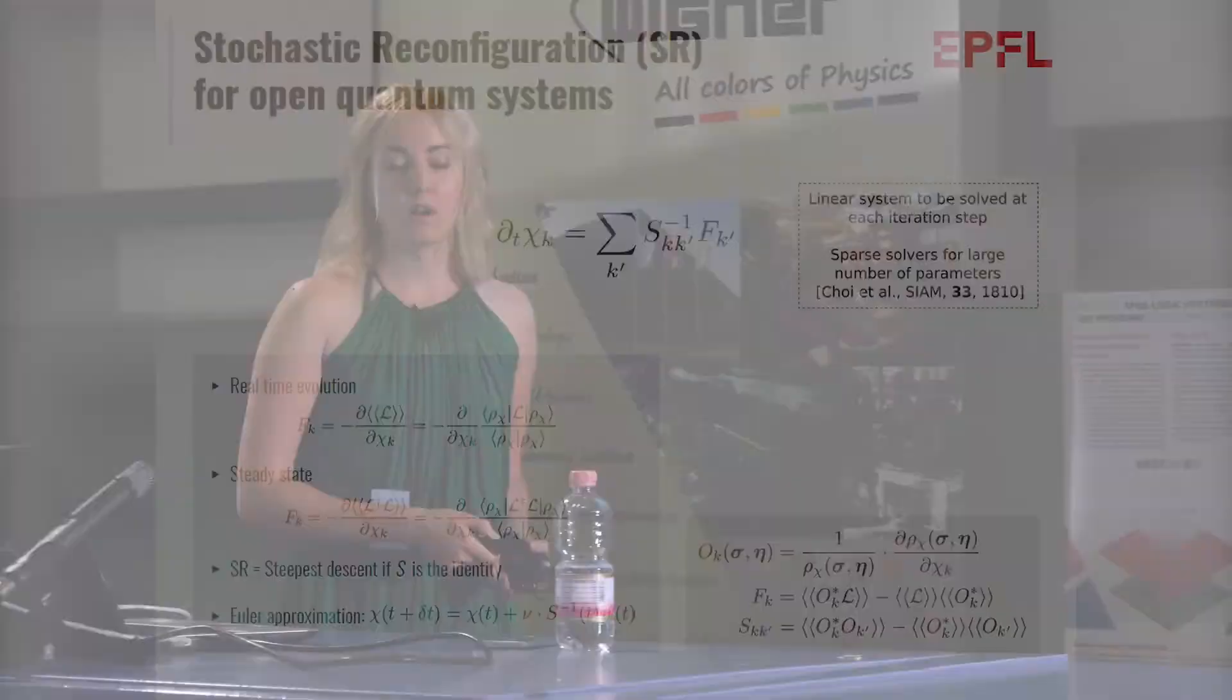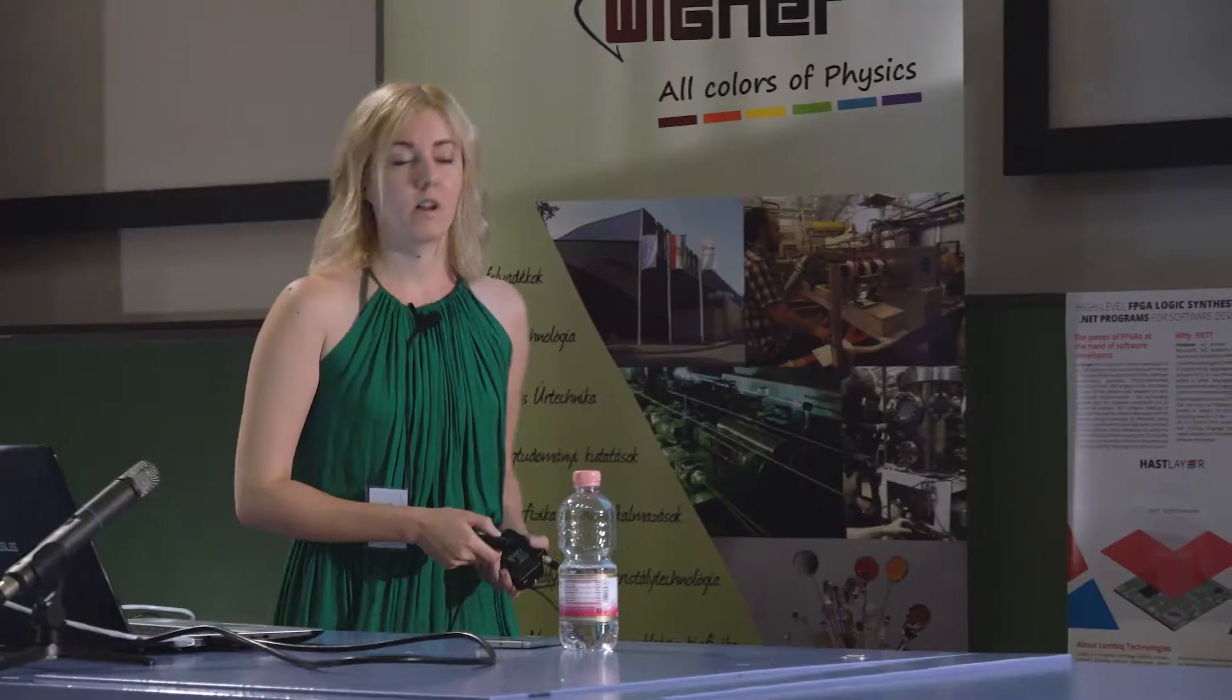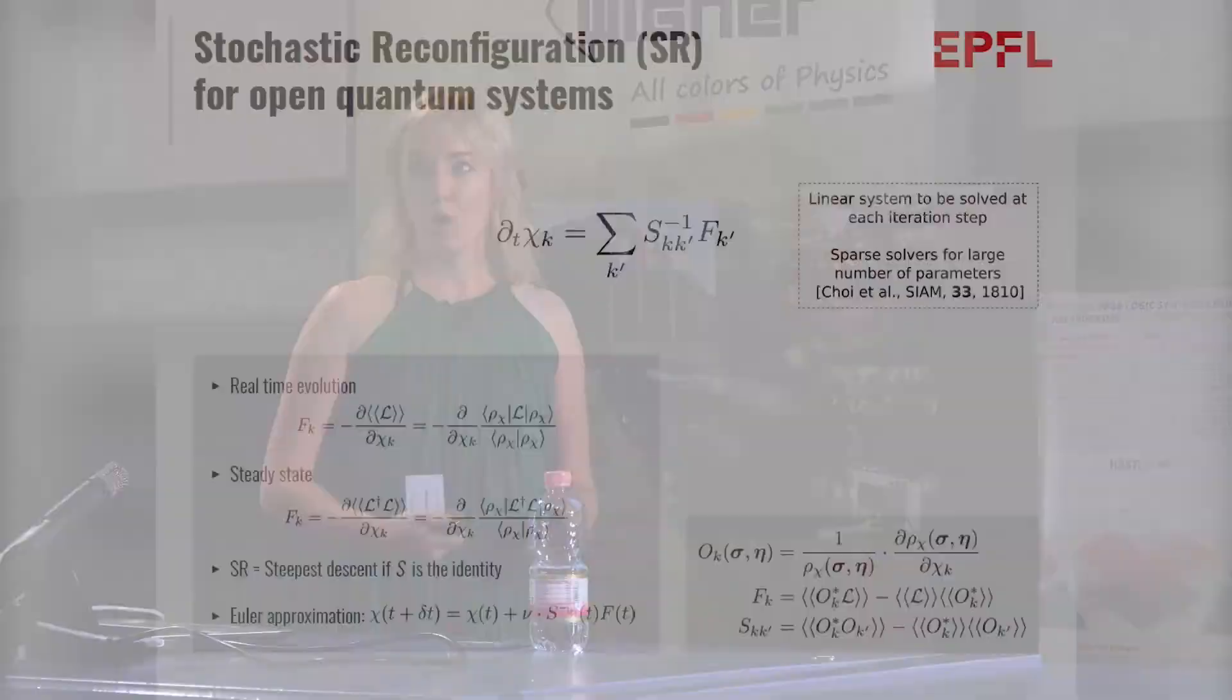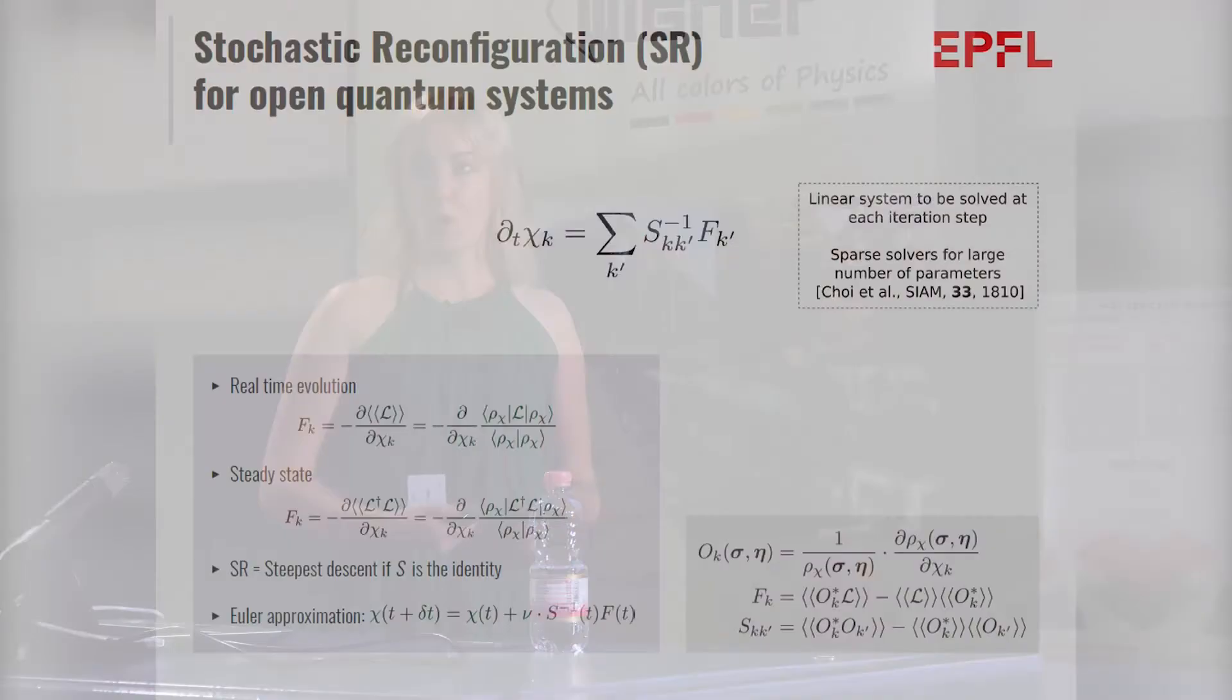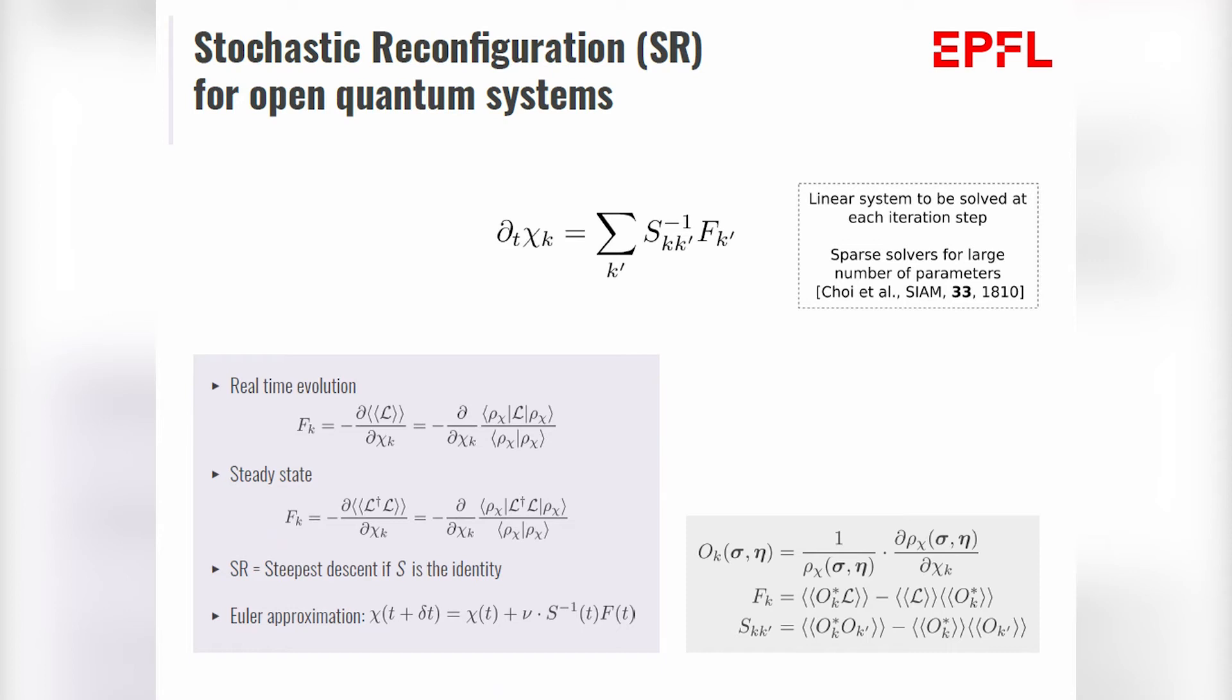We can also show that these forces are nothing else but the derivative of the expectation value of our super operator. What does this mean? It means that if we drive the evolution with this force, it will give us the real-time evolution until the steady state. If we do the other choice I told you about and we try to drive the system with the derivatives of L dagger L, then the evolution which we get is not going to be physical, but we will get to the same steady state. So once again, if we are only interested in steady state, we might choose this.